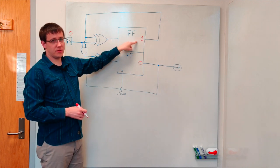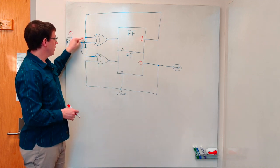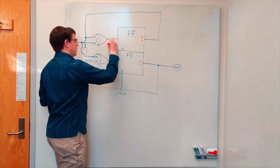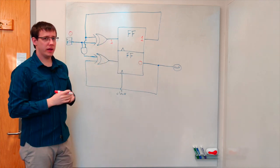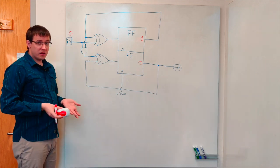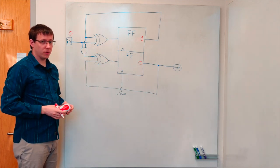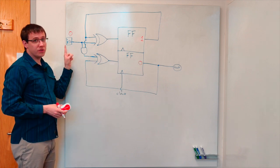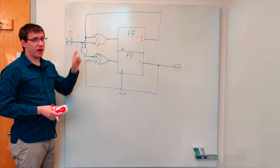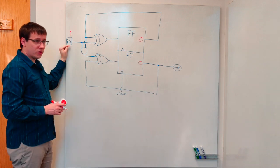If instead this top flip-flop is storing a one, this XOR gate will XOR a one and a zero, so it will output one, and we will store a one back into this flip-flop. In fact, if we go through all four possibilities for what the two flip-flops could be storing, we'll see that when the input is zero, the thing that will be stored in the flip-flops on the next time step never changes.